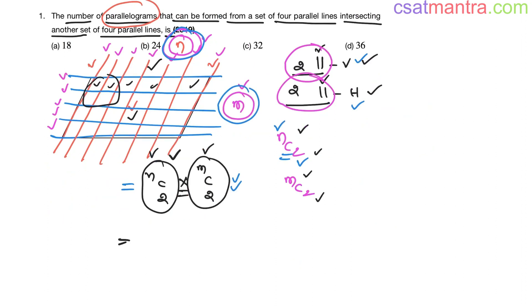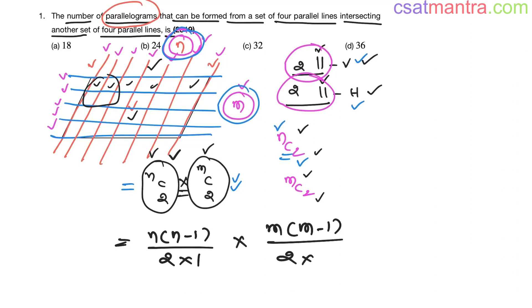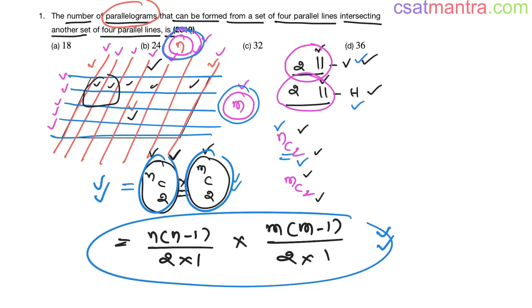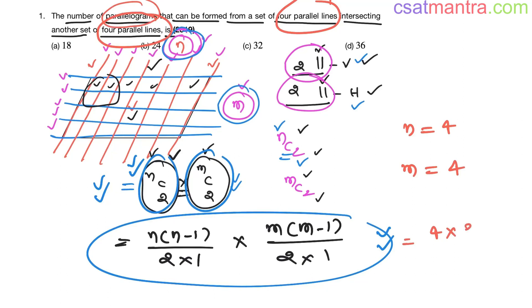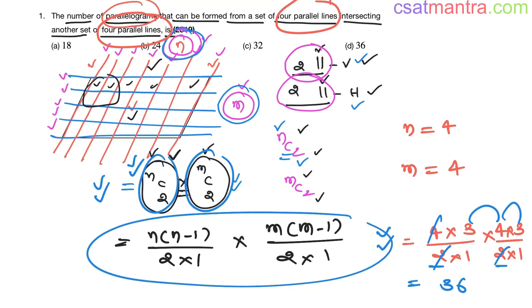The expansion of nC2 is n(n−1)/2, and mC2 is m(m−1)/2. In this problem we have four parallel lines intersecting another four parallel lines, so n = 4 and m = 4. That gives us 4×3/2 × 4×3/2 = 6 × 6 = 36. So our answer is D — 36.